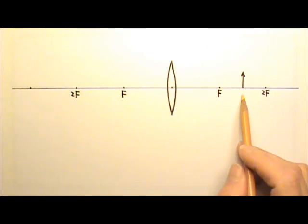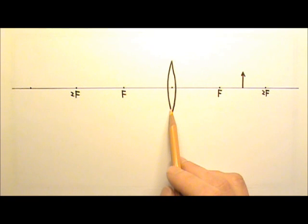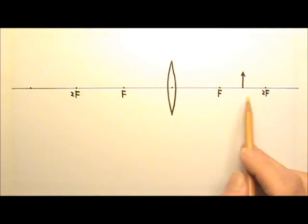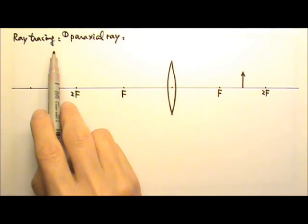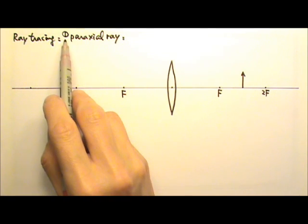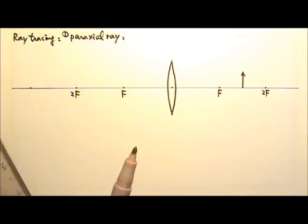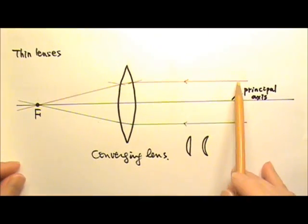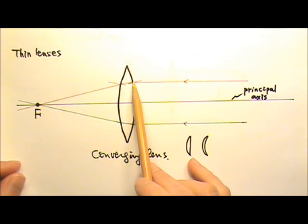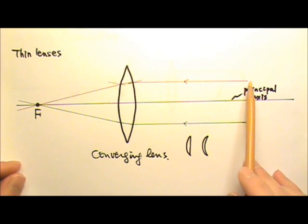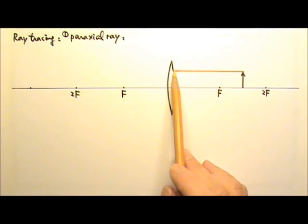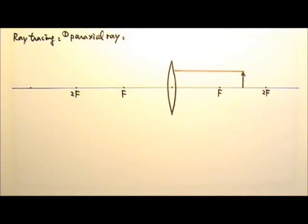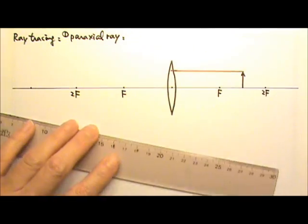Here I have a converging lens and an object in front of the lens, and we are going to find the image produced by this lens. I have labeled the focal points and the two F points on both sides of the lens. First we are going to use ray tracing to find the image. To use ray tracing, we need to draw two rays. The first ray is a paraxial ray — it goes from the tip of the arrow parallel to the principal axis. For a real lens the light ray should bend twice because of two refractions, but to make it simpler when we draw the ray tracing, I am just going to make the ray bend once at the middle.